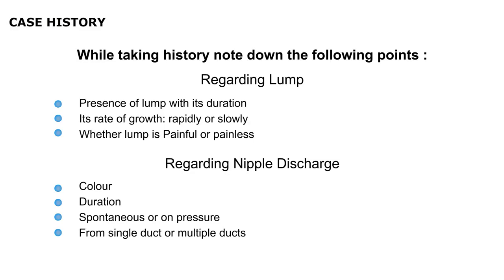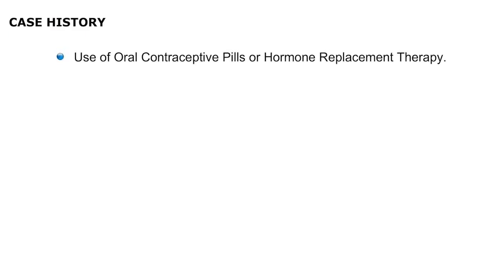While taking history for a patient suffering from breast complaints, note down the following points. Ask if she noticed any lump in the breast — if yes, its duration and whether it grew rapidly or slowly, and whether the lump is painful or painless. If she noted any discharge from the nipple, note down the color, duration, whether it comes spontaneously or only on pressure, and whether it comes from a single milk duct or from multiple milk ducts. Use of any oral contraceptive pills or hormone replacement therapy should also be noted.